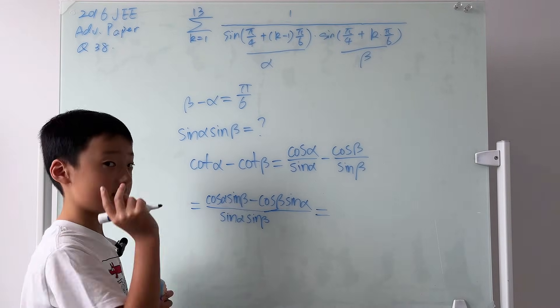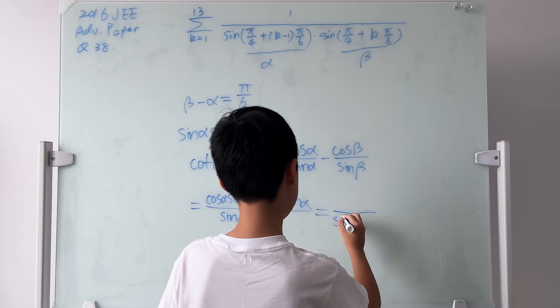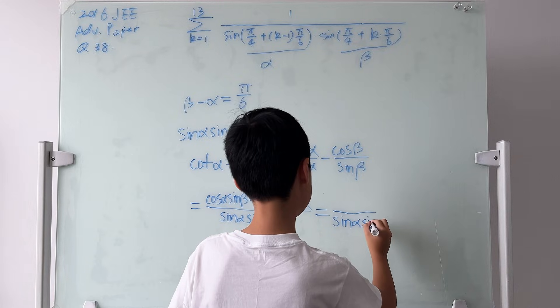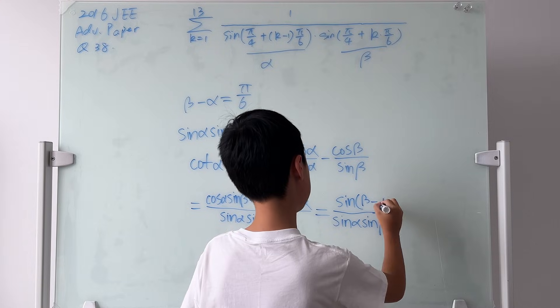This is equal to, look at the top. This is an expansion of some sorts. Well, this is actually sine of beta minus alpha. So the bottom being sine alpha sine beta, and the top is just sine of beta minus alpha.